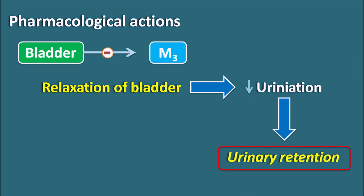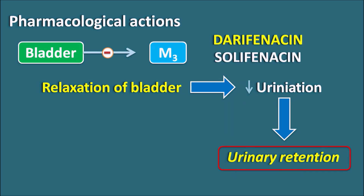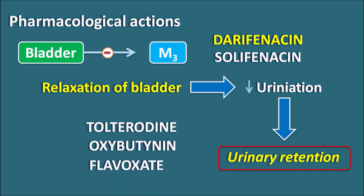We have two selective M3 blockers — darifenacin and solifenacin — which can be used as bladder relaxants. Other drugs like tolterodine, oxybutynin, and flavoxate are non-selective anticholinergics which are also used as bladder relaxants.